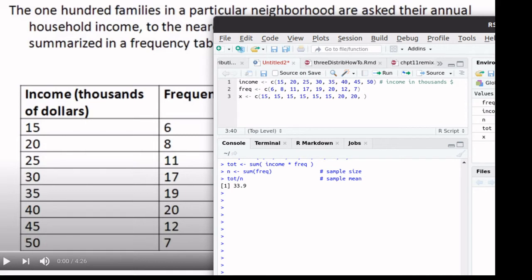But maybe there's an easier way. What we're interested in finding is adding up all of those 15, those six 15s, all of those 20s, there's eight of them, all of those 25s, there's 11 of them.